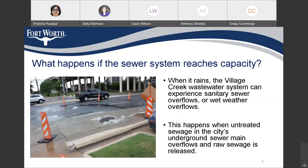What happens if the sewer system reaches capacity? When it rains, since the system in this sewer basin is at capacity, it overflows. We also call them wet weather overflows. This happens when untreated sewers in the city's underground sewer system overflow and the raw sewer is released.